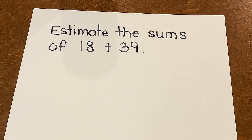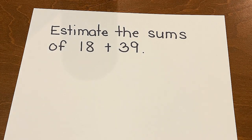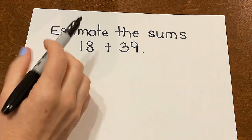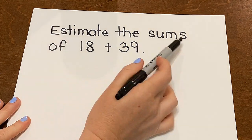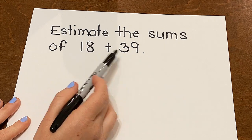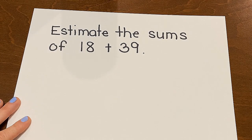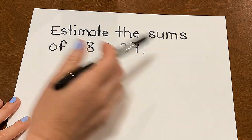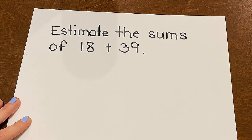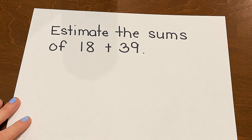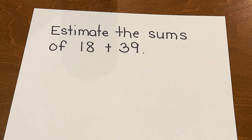This time, we're going to practice finding sums to an addition problem, but we're going to be using estimation or rounding to help us. The problem says: estimate the sums of 18 plus 39. Remember, the word estimate means around — it's not exact. So we're not going to be adding these for the actual answer; we're going to use rounding. So first, let's start with the number 18.